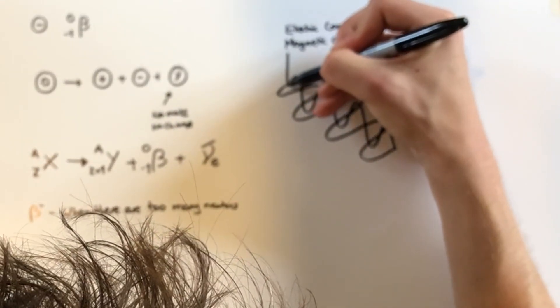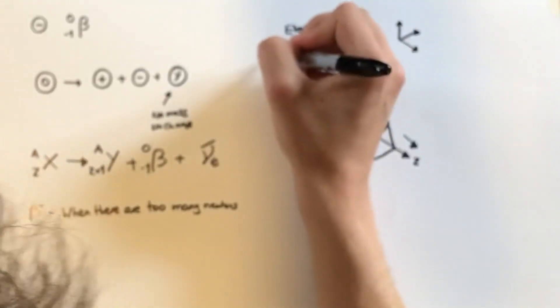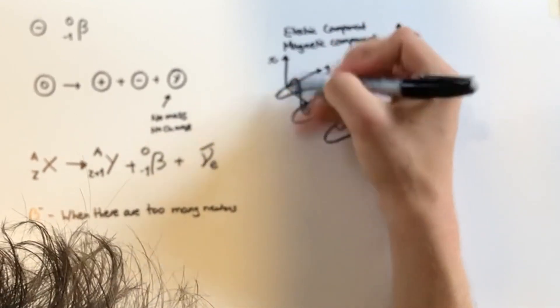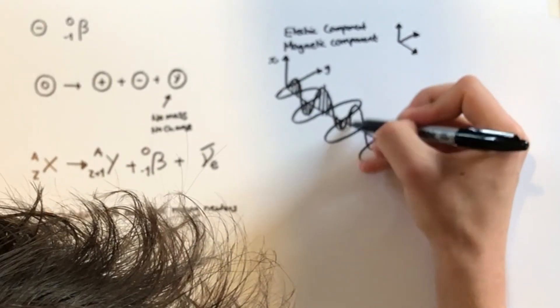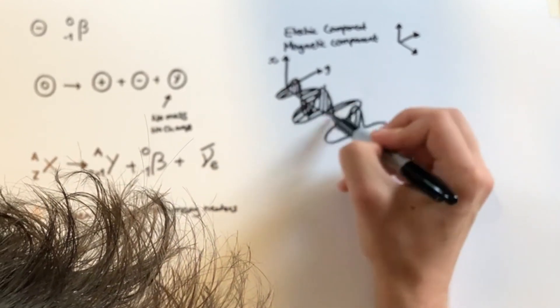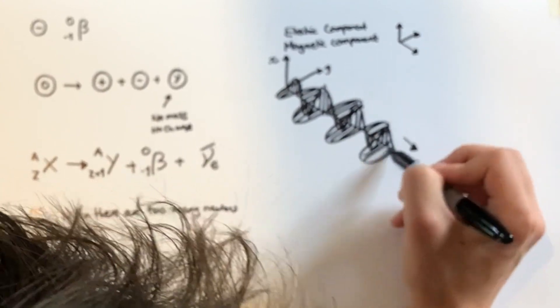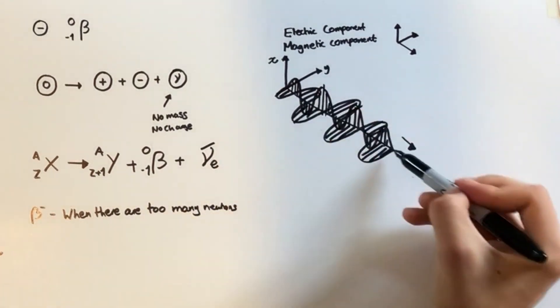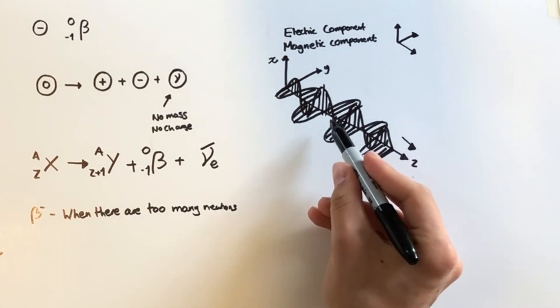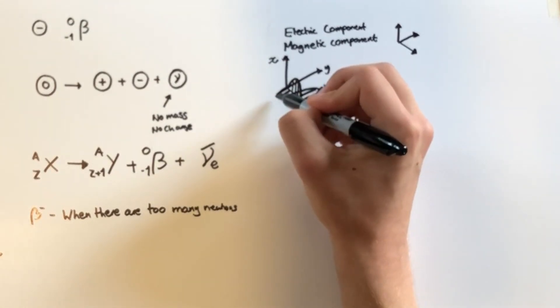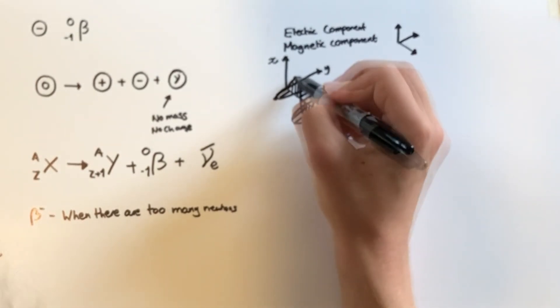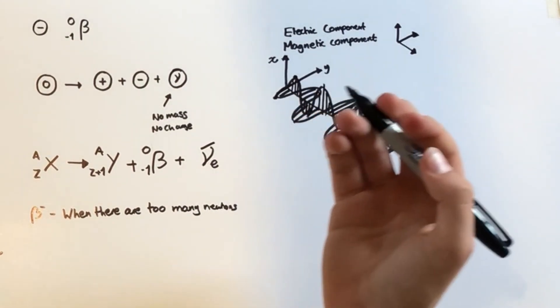And then you've got the magnetic component oscillating in this plane. But of course, the wave as a whole is actually travelling in that direction there. So if we give these a set of axes, and if we say that this is z, that's y, and that's x, the electric field is oscillating up and down in the x direction. The magnetic component is oscillating back and forth in the y direction. And the whole wave is of course moving in the z direction right there. It's important to note that the electric and magnetic components are what's known as in phase with one another. So as you can see, this peak here of the magnetic field actually lines up with this peak here of the electric field. And phase is an important concept when it comes to dealing with waves in a future video.